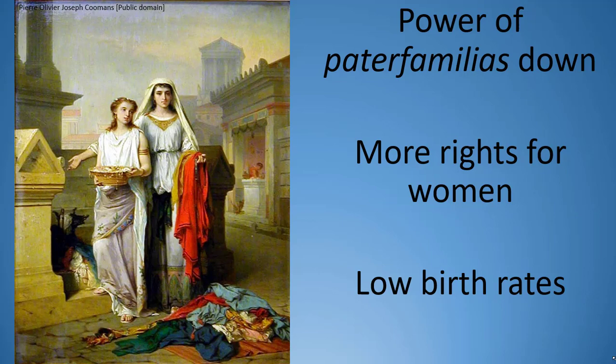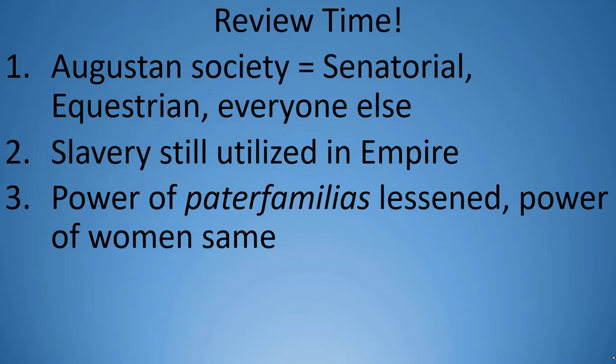Let's do our final review. First, under Augustus, society was divided into three social classes: the senatorial class, the equestrian class, and everyone else. Second, slavery was still a mark of prestige during the empire, and enslaved people were used in a variety of roles. Finally, though the power of the paterfamilias waned during the empire, women still did not have official political power or rights, but could exercise behind-the-scenes influence as they had during the Republic.